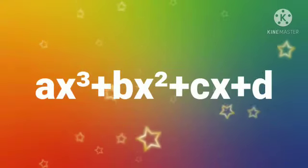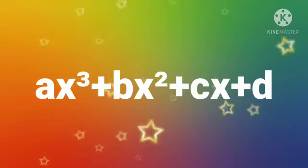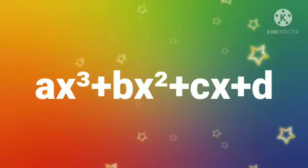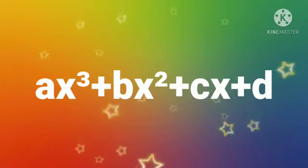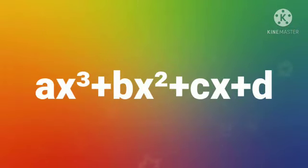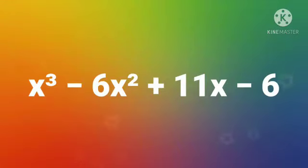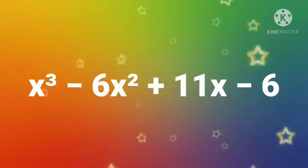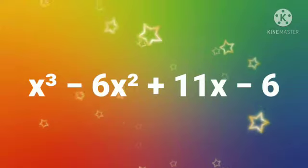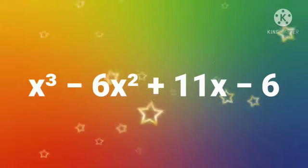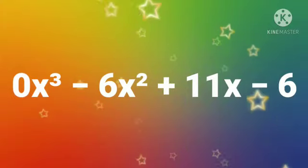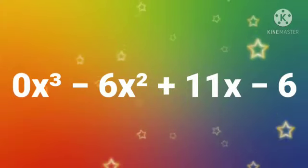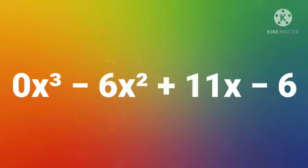The general form of a cubic polynomial is AX cube plus BX square plus CX plus D, where X is an unknown variable and A, B, C, D are real numbers. If A is equal to 0, then it becomes a quadratic polynomial.